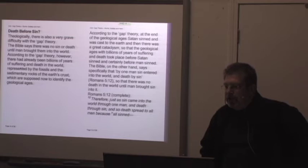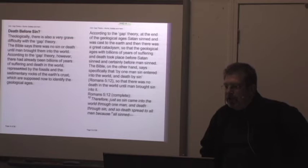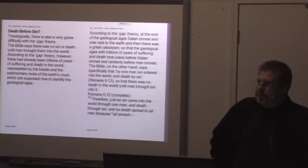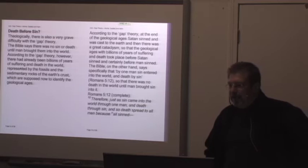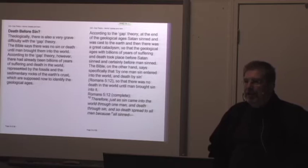The Bible, on the other hand, specifically states, says specifically that by one man sin entered into the world and death by sin. Romans 5:12. So that there was no death in the world until man brought sin into it. Context. Context. Here actually is the complete Romans 5:12. Therefore, just as sin came into the world through one man and death through sin, and so death spread to all men because all sinned. What's the context? Spiritual death. Spiritual death and result in physical death, not death among the animals. Not death related to the angels. Not death related to anyone else, but related to man. Man. No one else. Notice how he left that out.